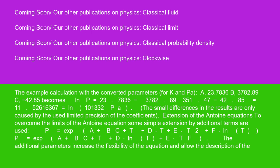Extension of the Antoine equations: To overcome the limits of the Antoine equation, some simple extension by additional terms are used. P equals exp(A plus B over C plus T plus DT plus ET^2 plus F ln T).